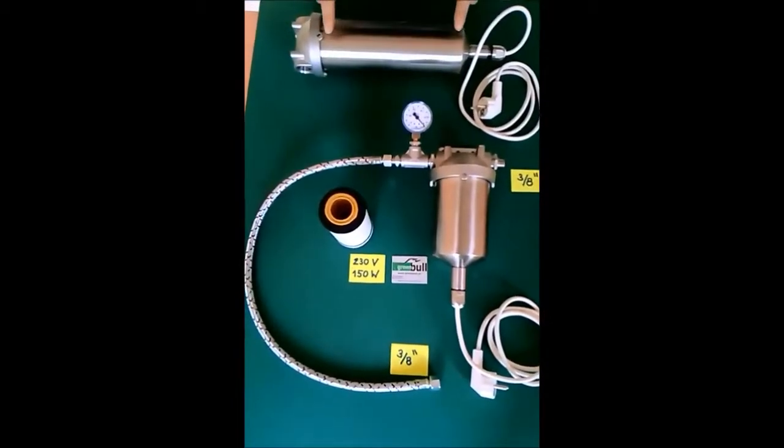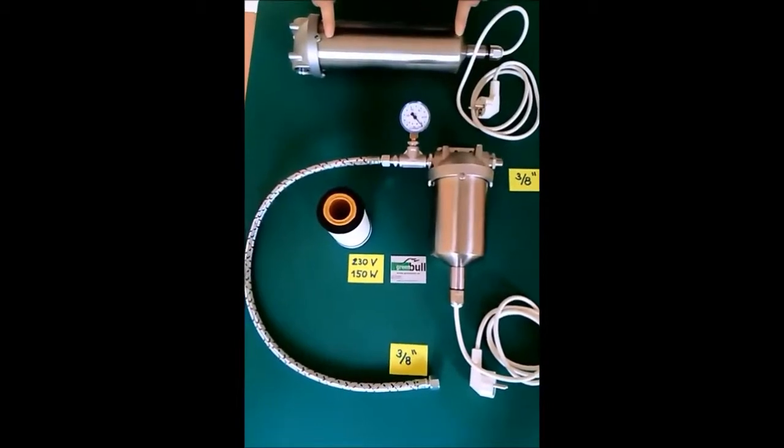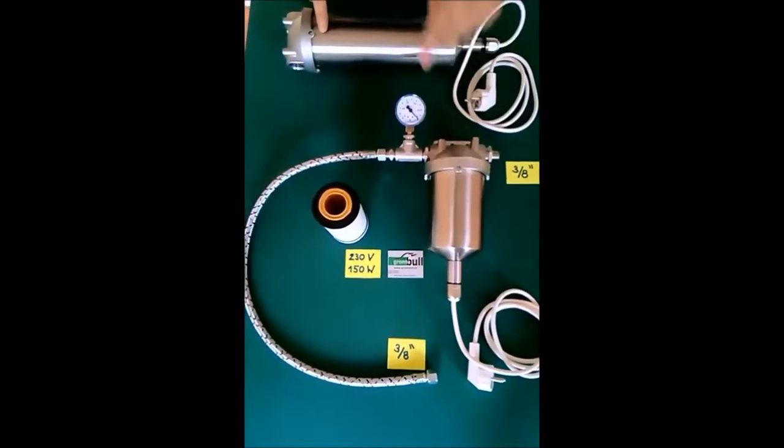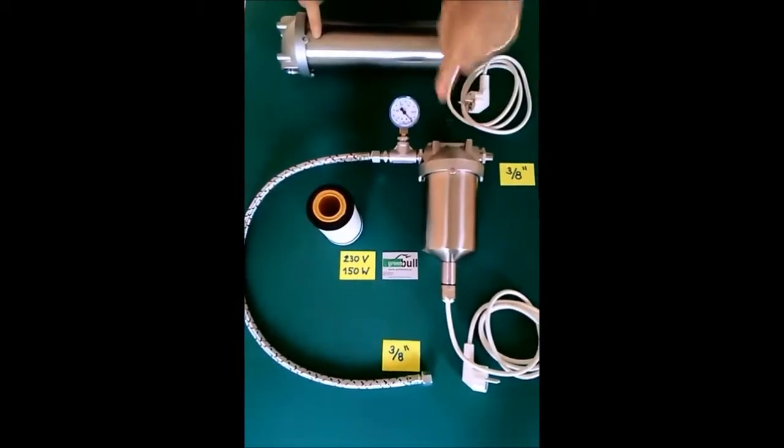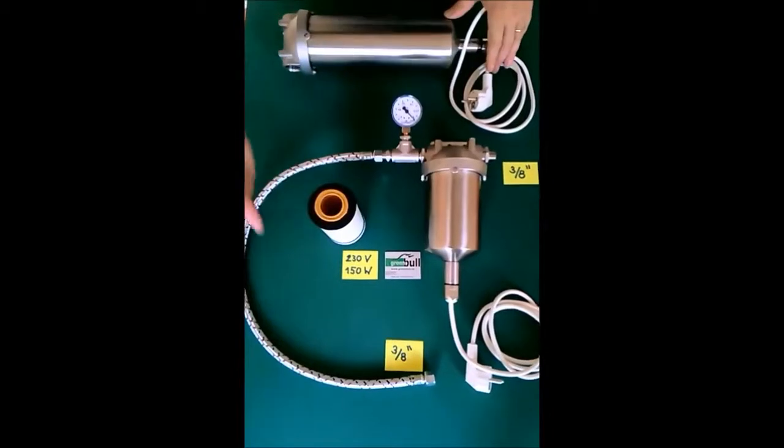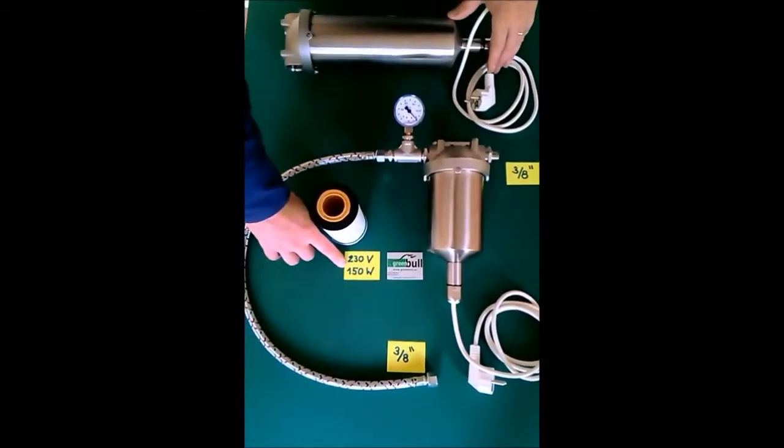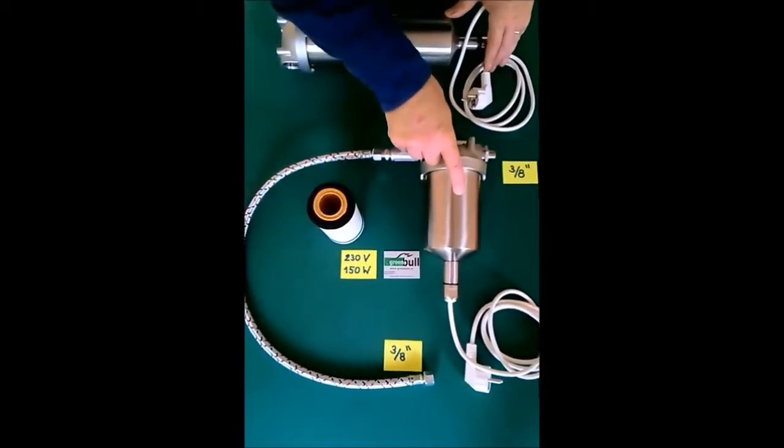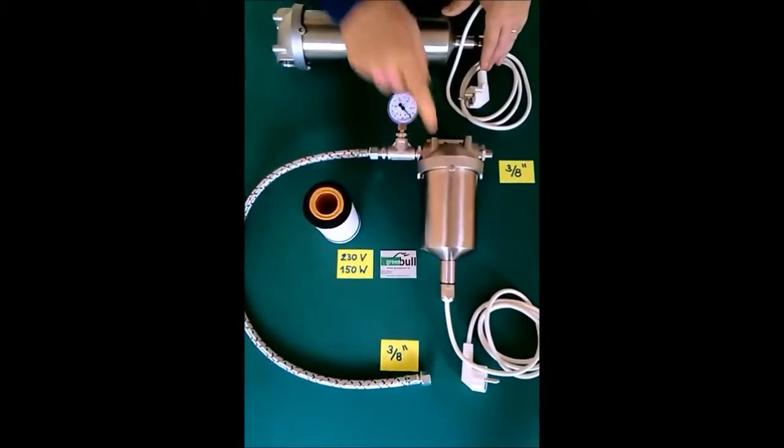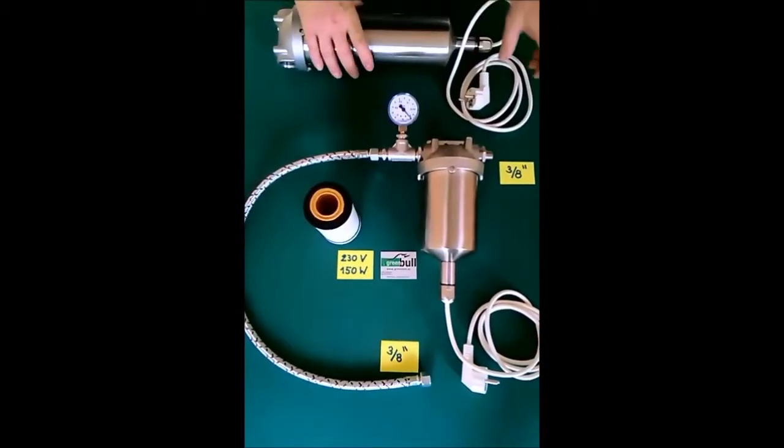You see here two versions of the Green Bull filter system. This is a filter housing we call Inox 10 and this one 20. The difference between the two is the size and also the heating power. The small version here is equipped with a heating cartridge of 150 watt and the larger one of 300 watt.